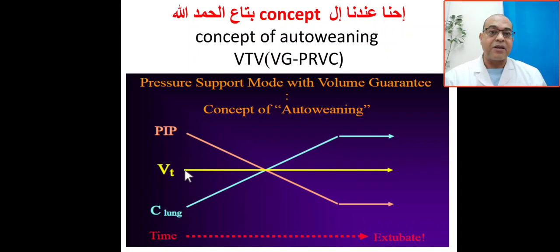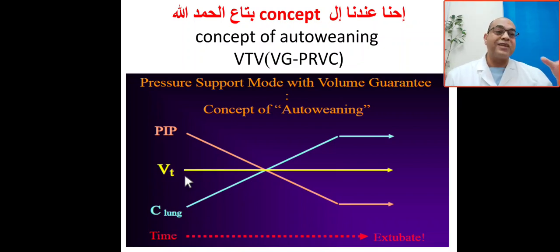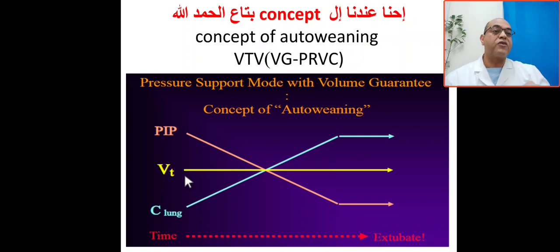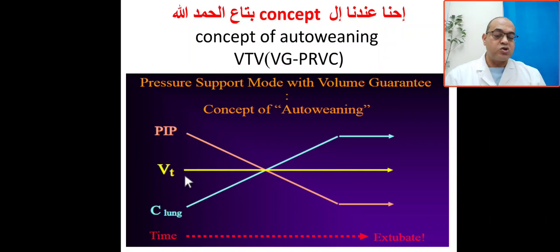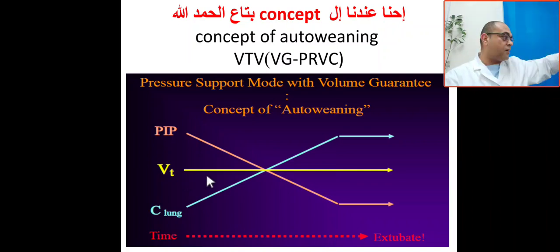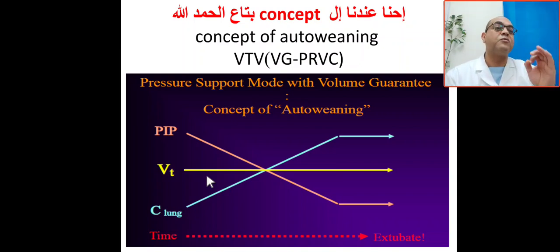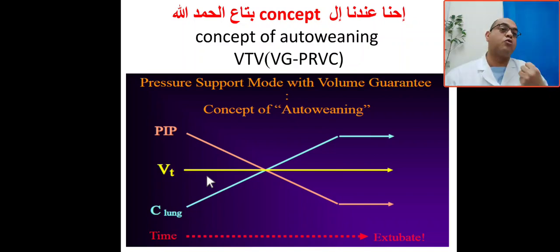We'll see here how it happens. This is the tidal volume — the yellow line. We set or control the tidal volume. The normal tidal volume is 4 to 6 ml per kg, or by some references 4.5 to 5.5 ml per kg. So I will set the tidal volume and you can see it is constant — one consistent line. This is constant tidal volume.